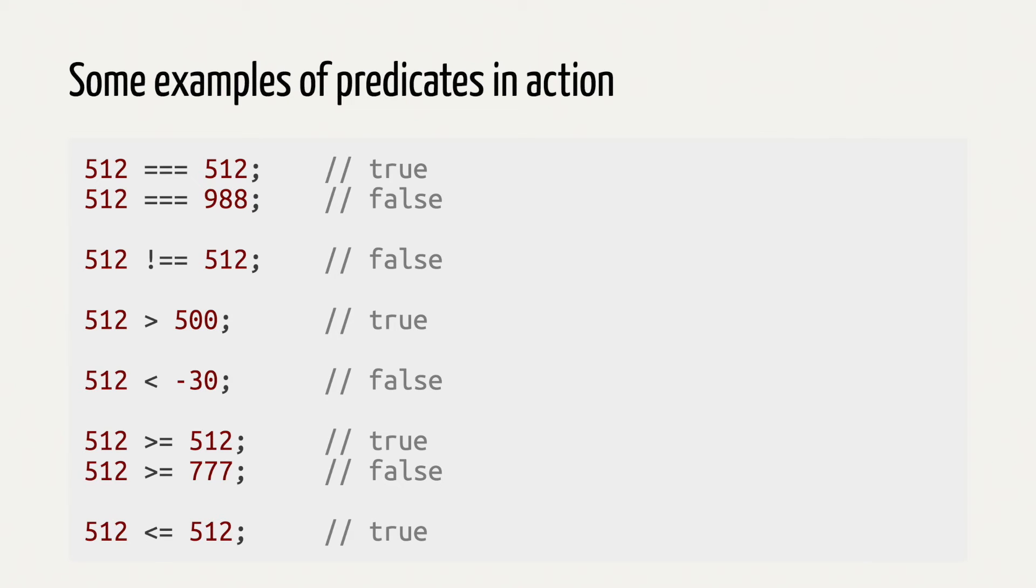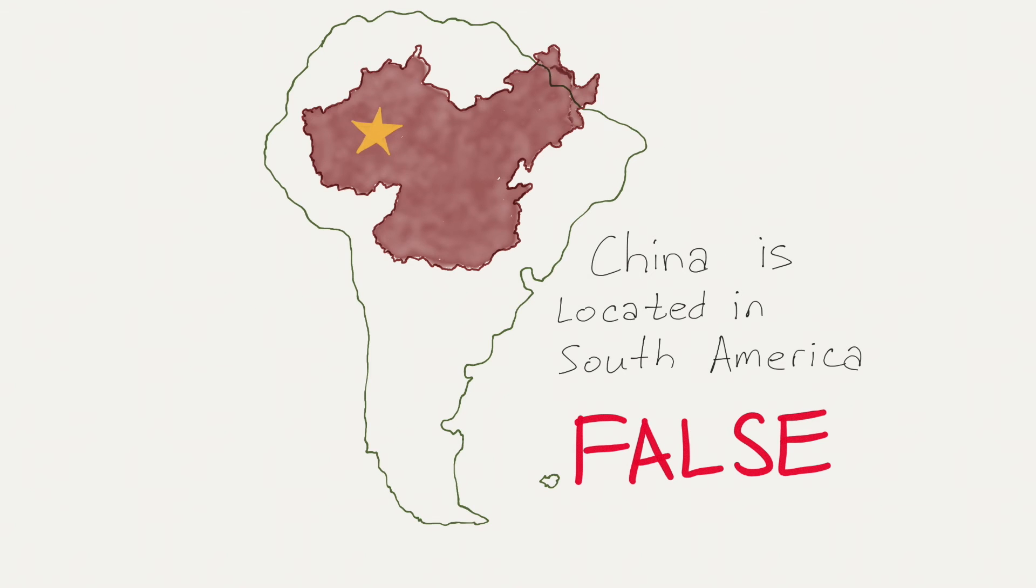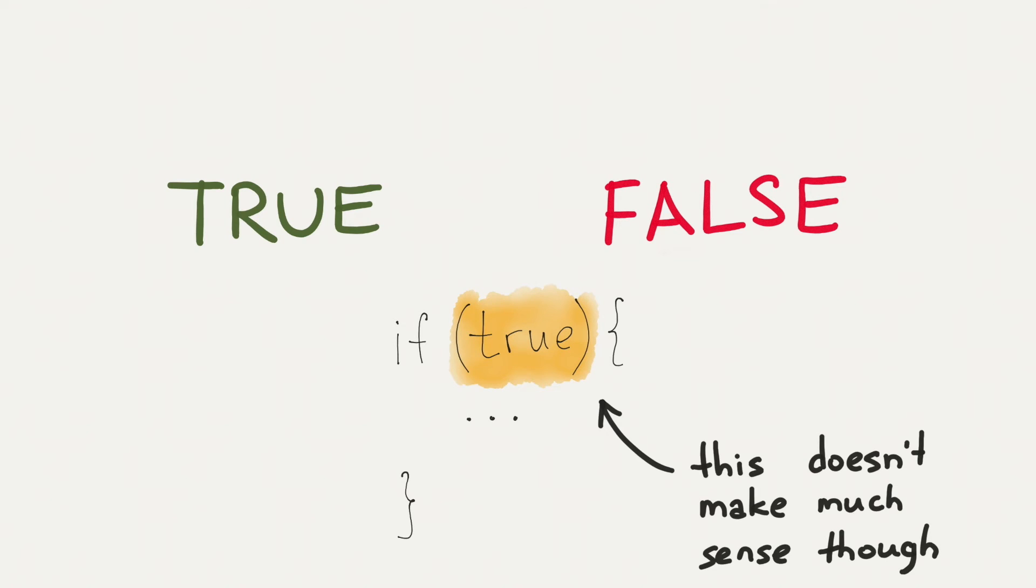The branch of math that studies these true and false statements is called boolean algebra. In general, statements of any nature, not just number systems, can be true or false. For example, I'm a human being is true, China is located in South America is false. JavaScript has true and false values, and you can actually use them in conditions. For example, you can say if true, and this condition will always be met, because true is always true.